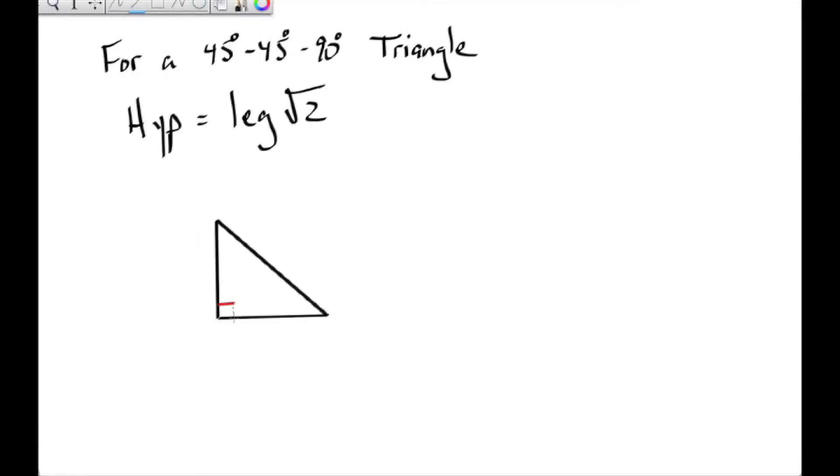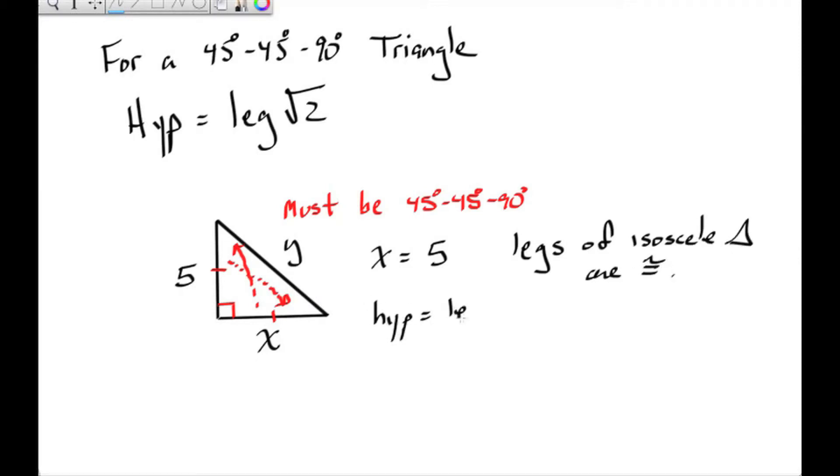We have an isosceles right triangle, therefore the angles must be 45-45-90. So let's say one leg is 5, one is x, and the hypotenuse is y. So x must equal 5 because the legs of the isosceles triangle are congruent. The hypotenuse is leg root 2. So therefore y equals 5 times root 2.